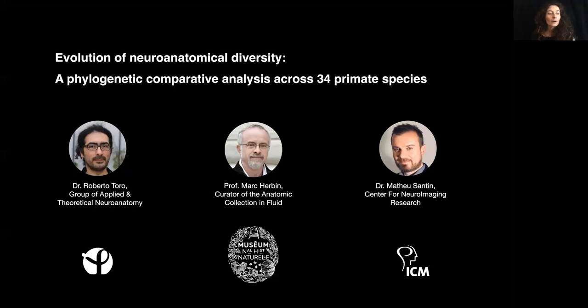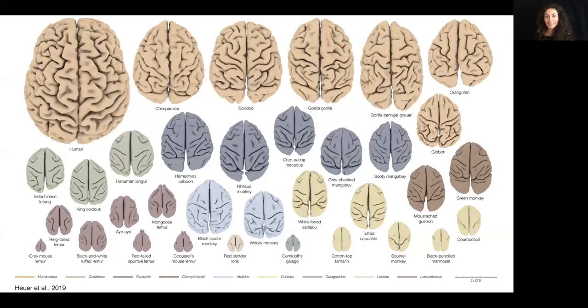A few years ago, Roberto Toro started the Brain Catalog Project to study the evolution of neuroanatomic diversity across the vertebrate kingdom together with the Natural History Museum in Paris and the Institute of Brain and Spinal Cord. In this collection of the museum, there are many different brains of different primates, and we were able to study high resolution MRI images of 34 different primate species. We use different tools to segment the pial surface, and also our collaborative web tool BrainBox, and we were able to reconstruct the 3D surfaces for all these different species.